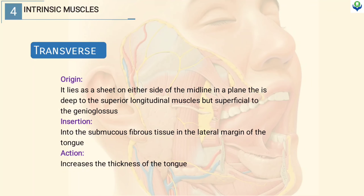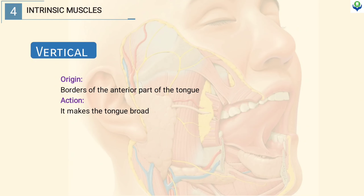Transverse muscle. It lies as a sheet on either side of the midline in a plane that is deep to the superior longitudinal muscle but superficial to the genioglossus muscle. It gets inserted into the sub-mucous fibrous tissue in the lateral margin of the tongue. It acts by increasing the thickness of the tongue. The vertical muscle originates from the border of the anterior part of the tongue and it makes the tongue broad.